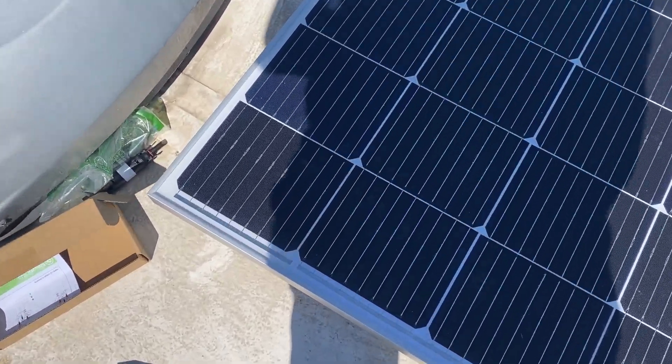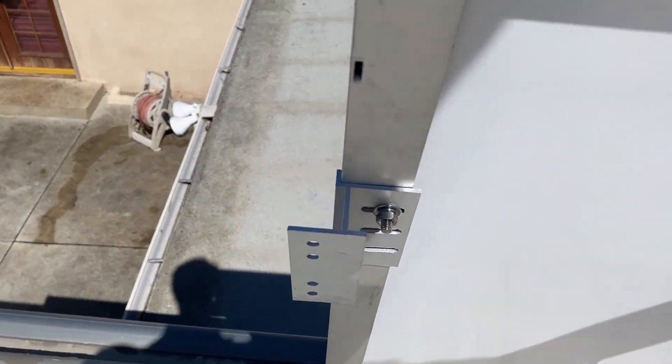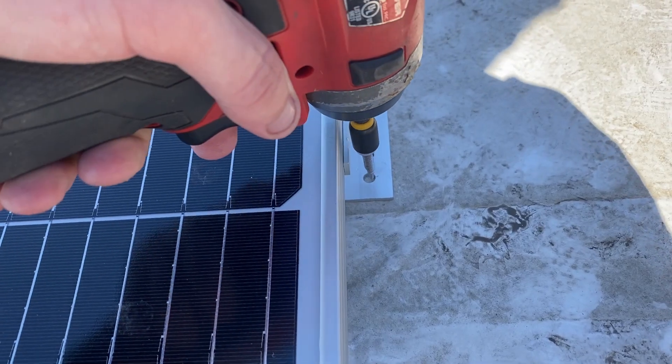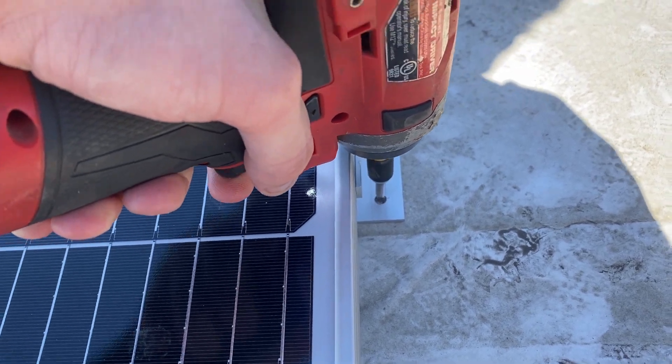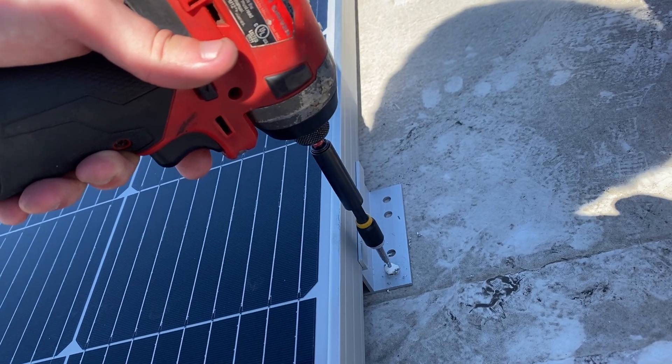For those who are curious how I mounted the panels, I used common Z brackets with self-tapping screws and drilled into where the metal framing was, which I found using a stud finder. Make sure to use a good amount of caulk to ensure that there are no water leaks into the RV.